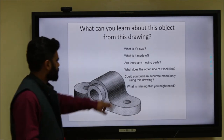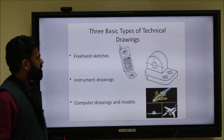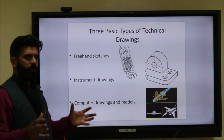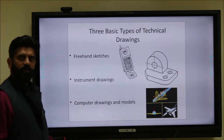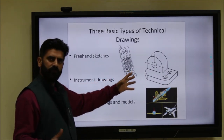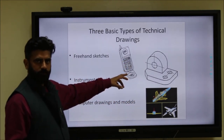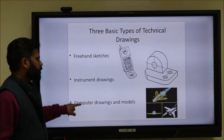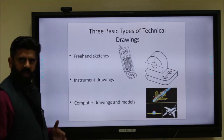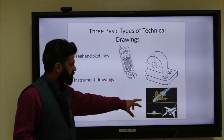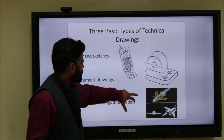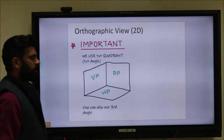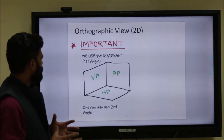There are three basic types of technical drawings. The first is freehand sketches — for example, a sketch of a mobile phone. The second is instrument drawing, where we use mechanical instruments to make the image. Our focus in this session is instrument drawing using 2D and 3D images. The third is computer-aided drawings and modeling, which uses supercomputers and electronic devices to produce drawings like the diagram of an aircraft.